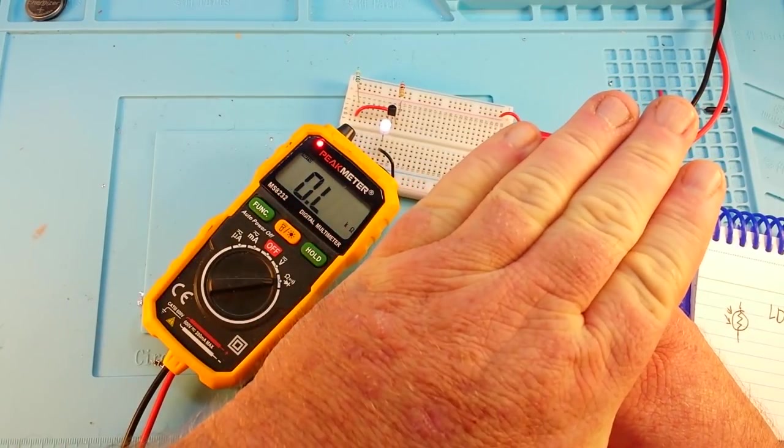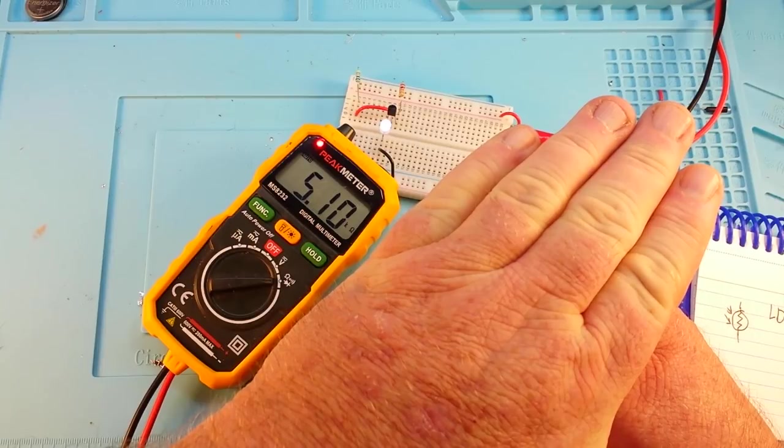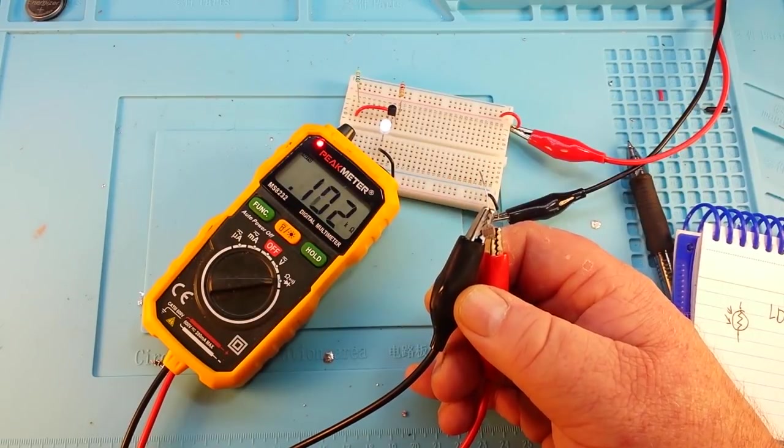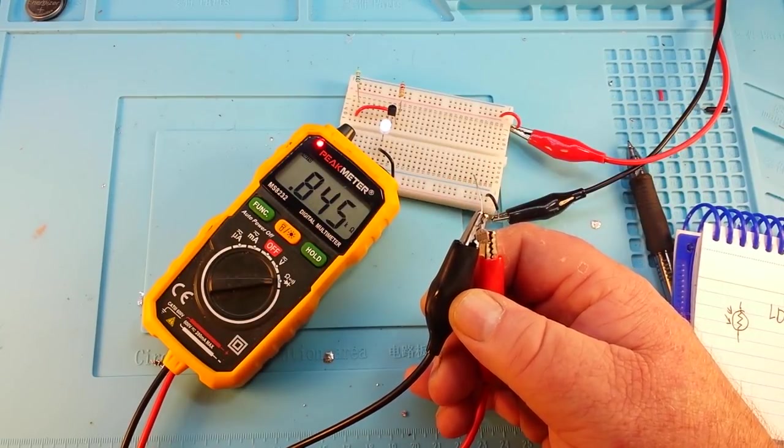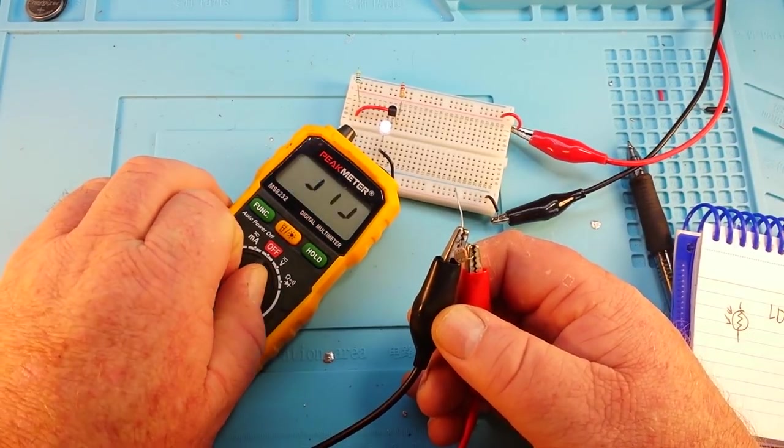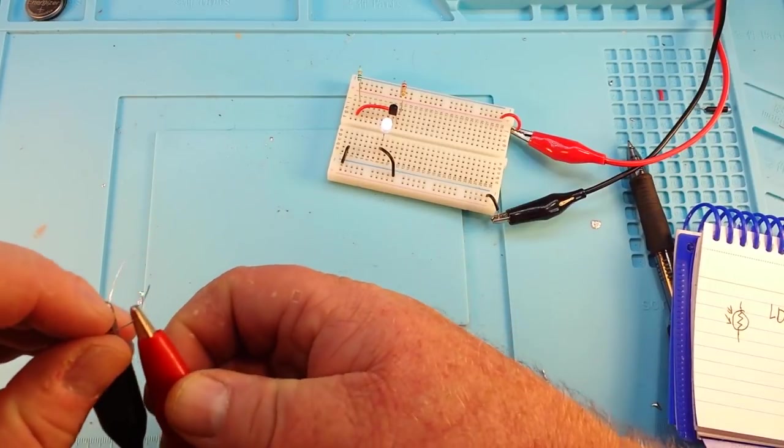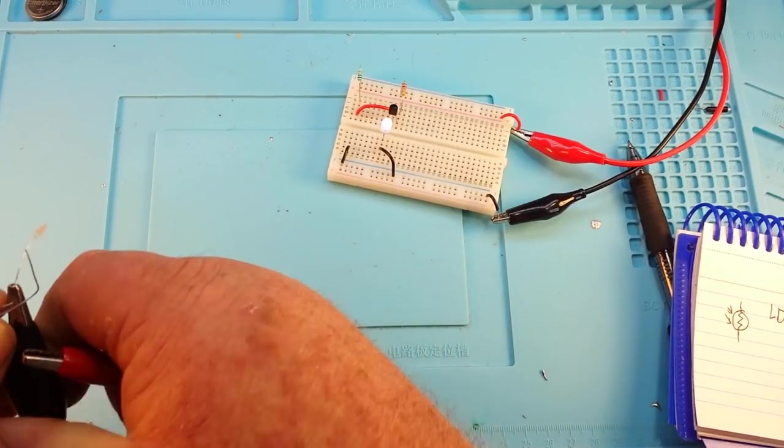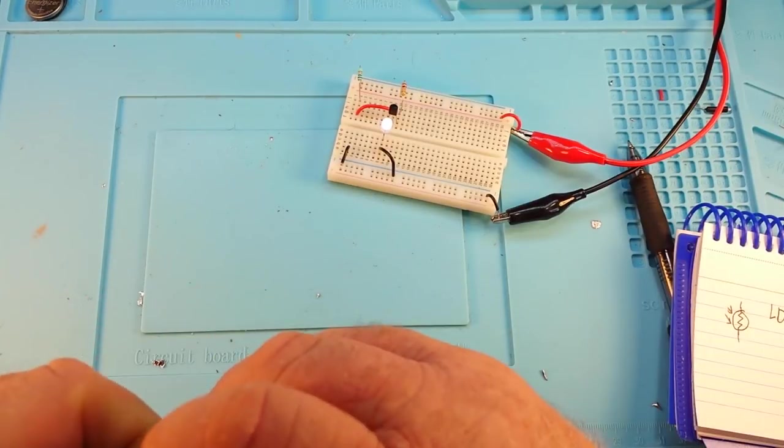And if I cover it up, you can see there we have 5k of resistance. There we have 0.8k of resistance. So the darker it gets, the more resistance we get.